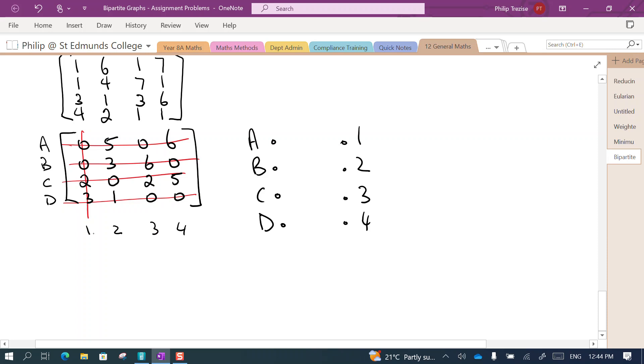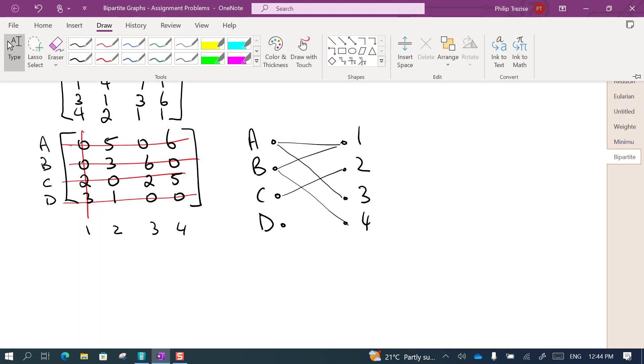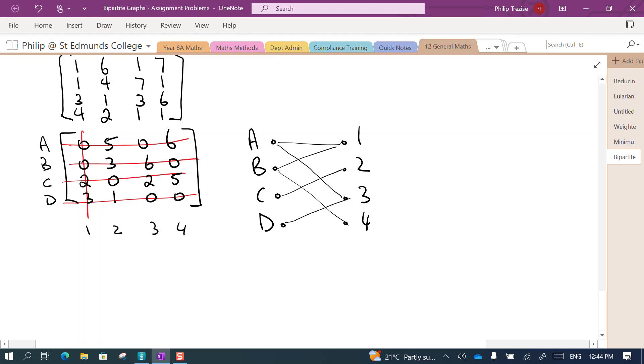So in the first row A can do job 1 or job 3. In the second row B can do job 1 or job 4. Third row C can only do job 2. And the last row D can do job 3, oh my mistake I hit the wrong one then. D can do job 3 or job 4. So every edge in my graph should correspond to a zero in my final matrix.